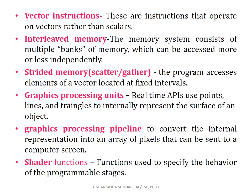GPU real-time API uses points, lines, and triangles to internally represent the surface of an object. It uses a graphics processing pipeline to convert the internal representation into an array of pixels sent to a computer screen. Processing in a GPU requires a very large amount of data and must maintain very high rates of data movement. To avoid stalls and memory losses, it relies heavily on hardware multi-threading. Shader functions are used to specify the behavior of the programmable stages.